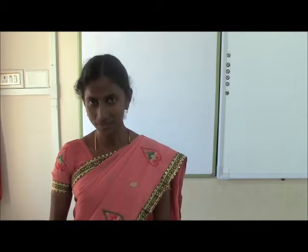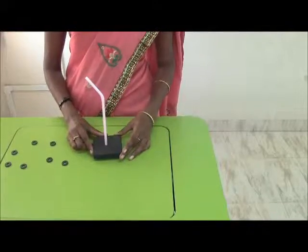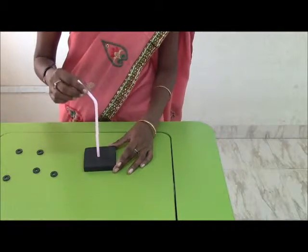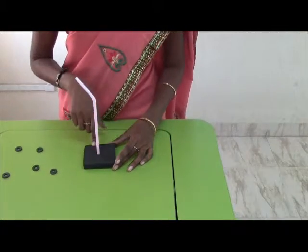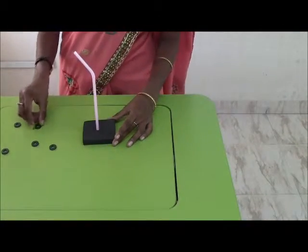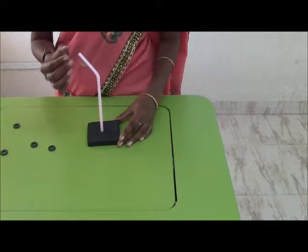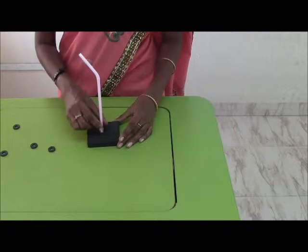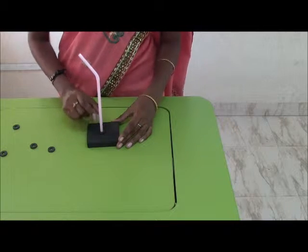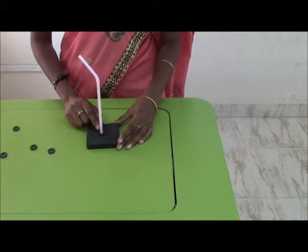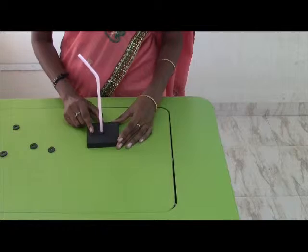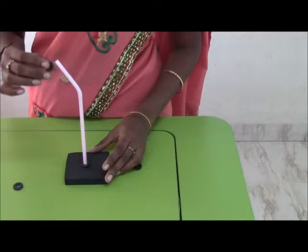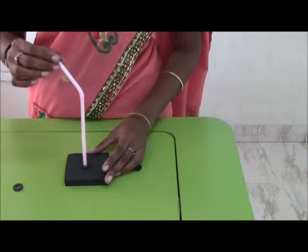Children, see this. Take a rubber piece and insert a bendy star into its hole. Then you have to insert ring magnets one by one. While doing this, keep in mind that the poles of the magnets should be similar. I am going to insert a ring magnet onto the bendy star.